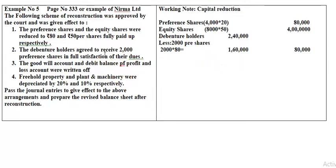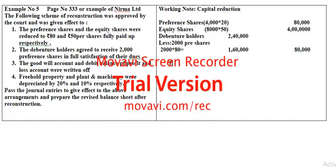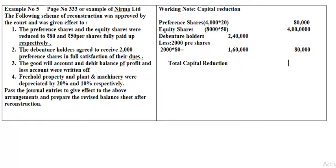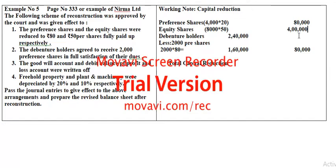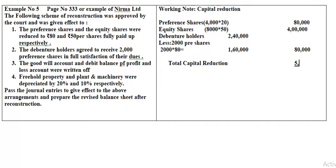Regarding the capital reductions — any confusions? The total capital reduction is: 80,000 (preference shares) + 4,00,000 (equity shares) + 80,000 (debenture holders sacrifice) + 80,000 = 5,60,000. This is going to be the total capital reduction.